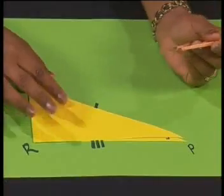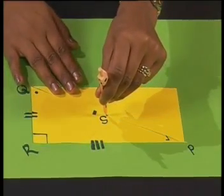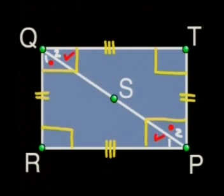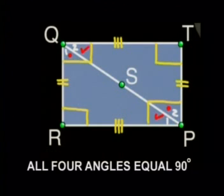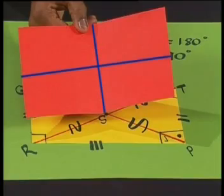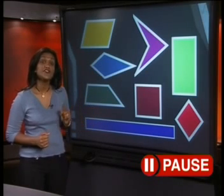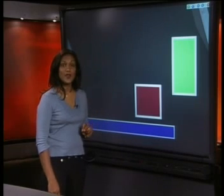Let's recap what we did. The rectangle was created by rotating the right-angled scalene triangle PQR around a fixed point in the center of one of its sides. We found that this rectangle is a special quadrilateral with exactly two pairs of opposite sides equal, with all four vertex angles equal to 90 degrees, the diagonals are equal and they bisect each other, and there are two lines of symmetry. A square is a special kind of rectangle because it does have opposite sides equal and four 90-degree angles at the vertex.